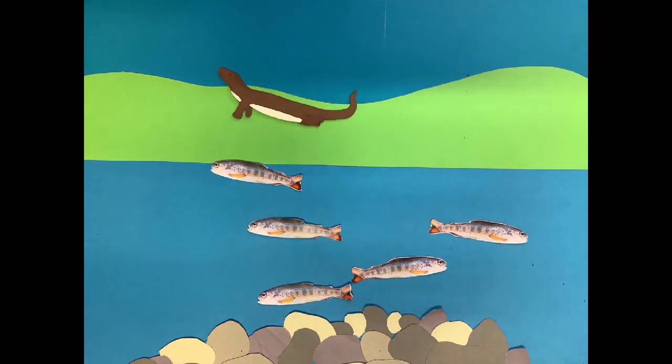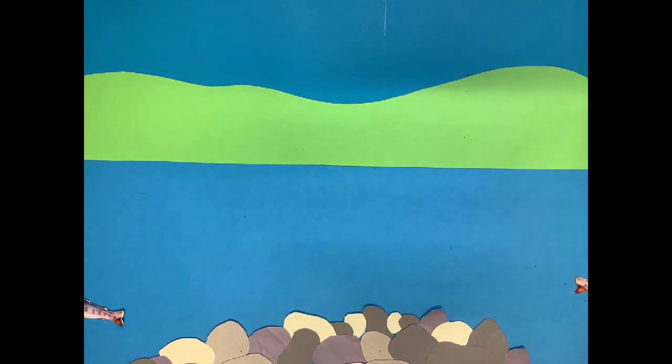Once they become parr, they often prefer deeper pools where they can hide from predators.